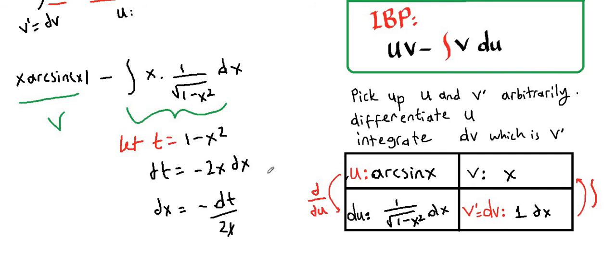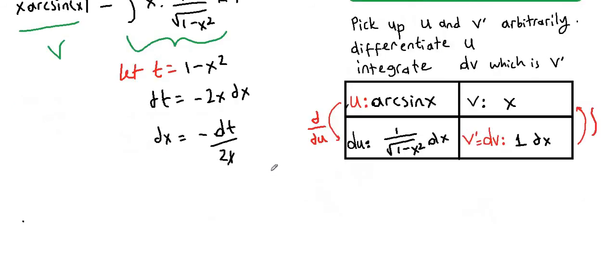Now we are going to write everything in terms of t. We had x arcsin(x) in front, minus integral of x times 1 over—instead of square root of 1 minus x squared, we are going to write square root of t.